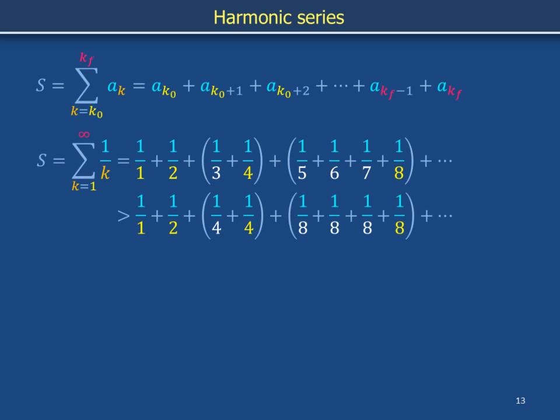Term-by-term inspection shows that S is larger than another series, 1 plus 1 half, plus 2 copies of a quarter, plus 4 copies of an eighth, and so on. 1 third is larger than 1 fourth, and 1 fifth, 1 sixth, and 1 seventh are each larger than 1 eighth.